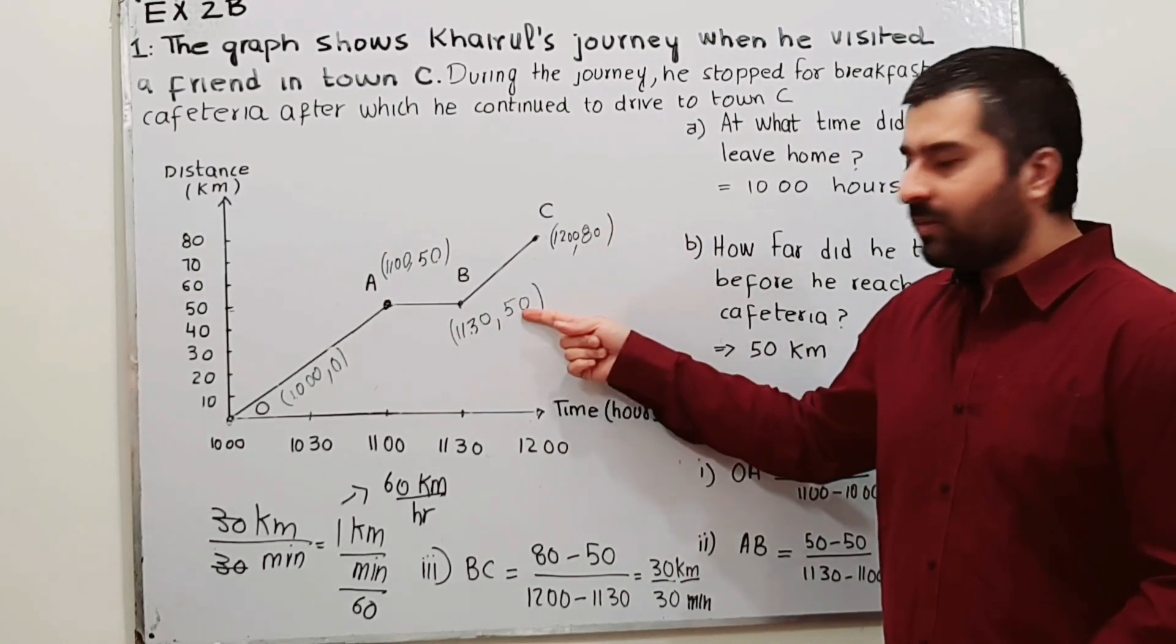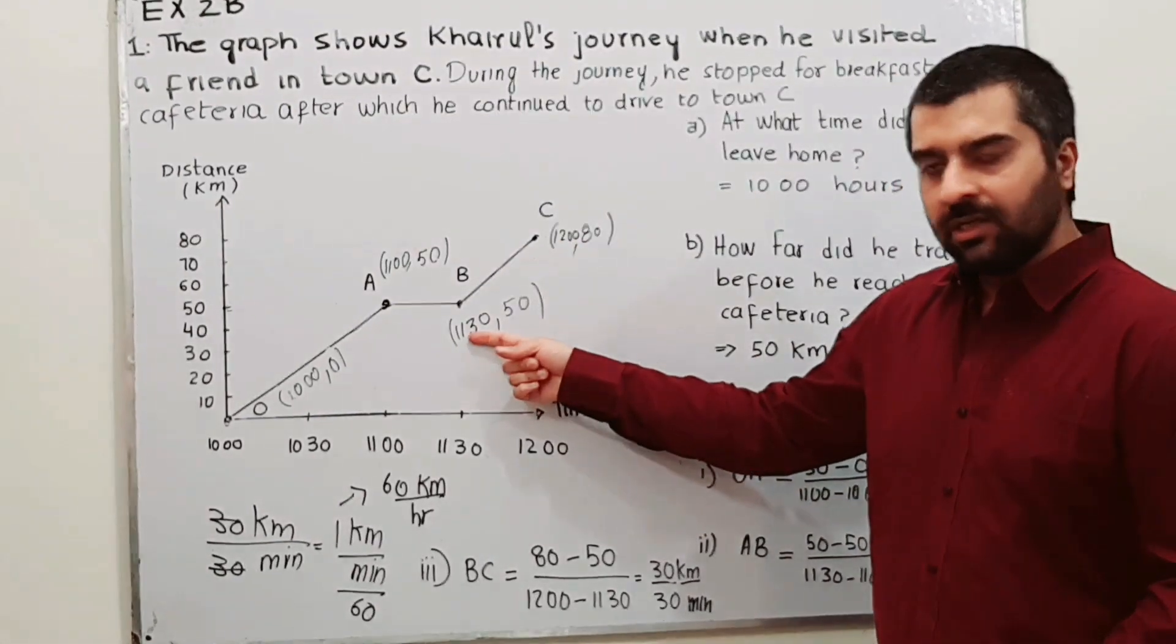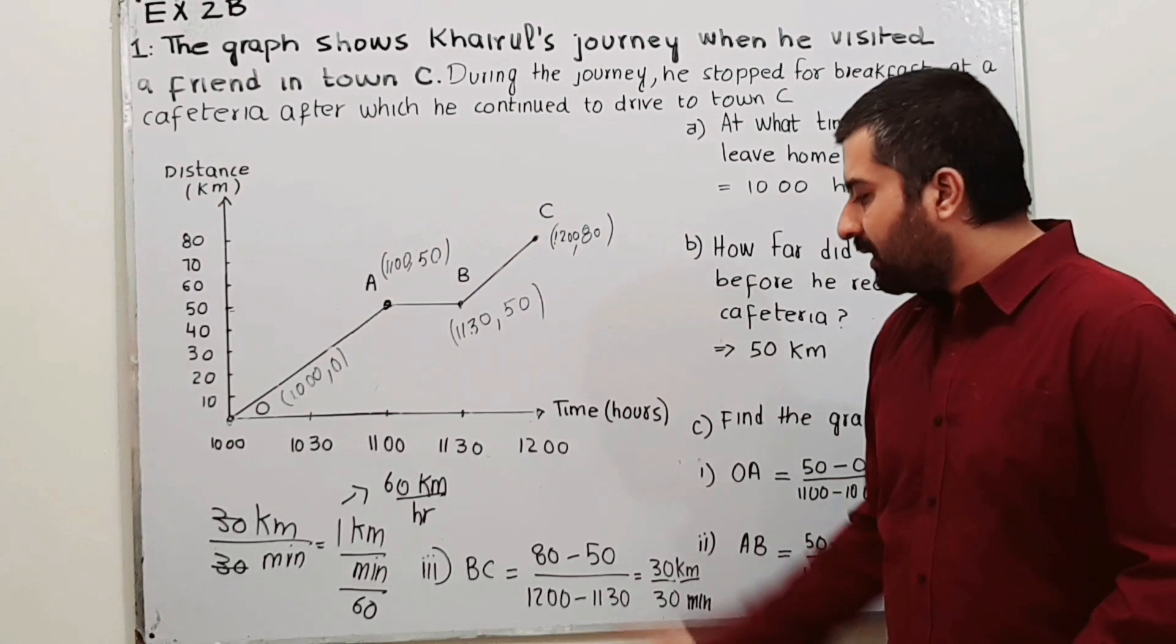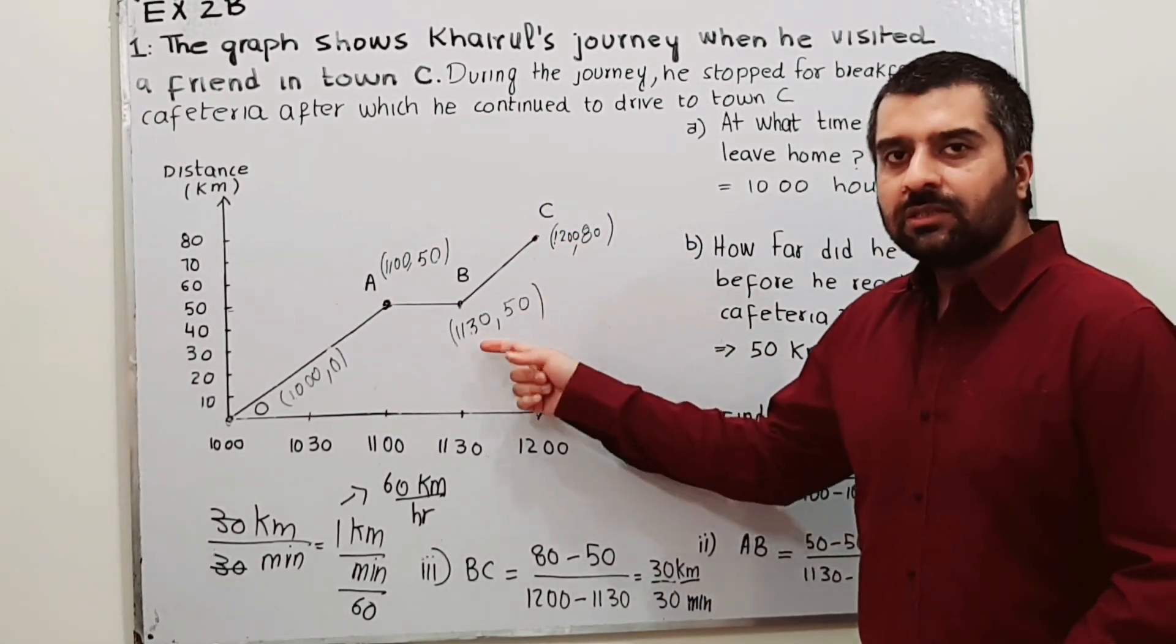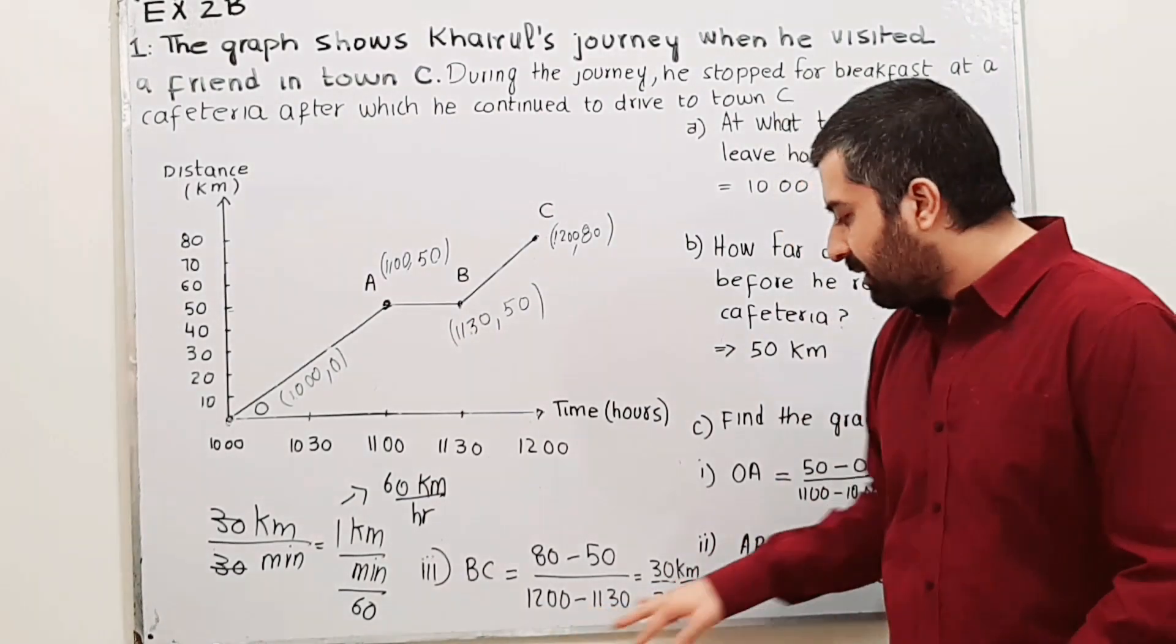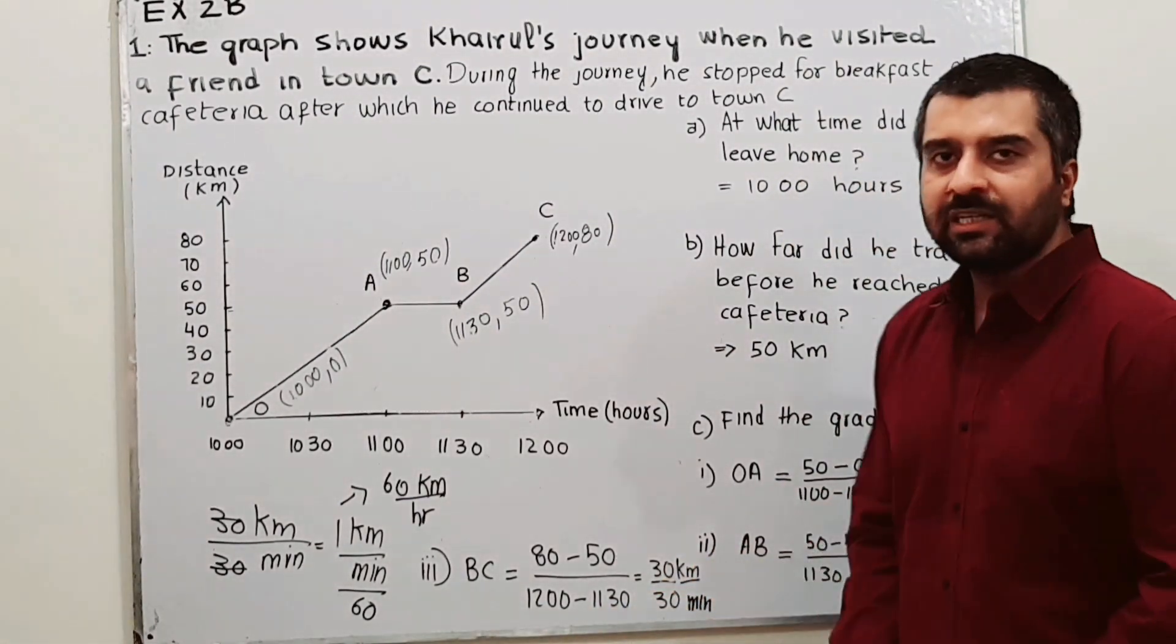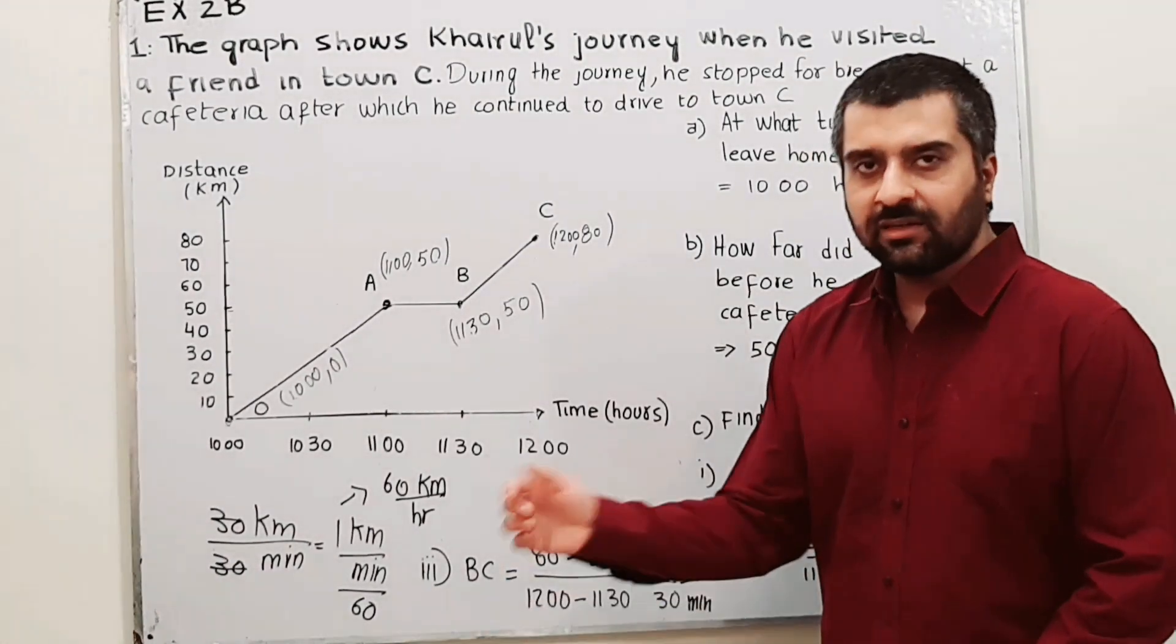Gradient is y2 minus y1, 80 minus 50, divided by x2 minus x1, 12 minus 1130. 80 minus 50 gives you 30. 12 hours minus 1130 hours gives you half hour, that is 30 minutes. Your solution will be 30 kilometers per 30 minutes. This is not the final answer. We have to find the answer in kilometers per hour.